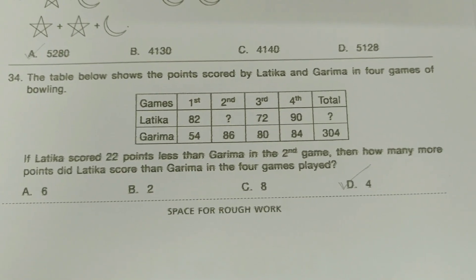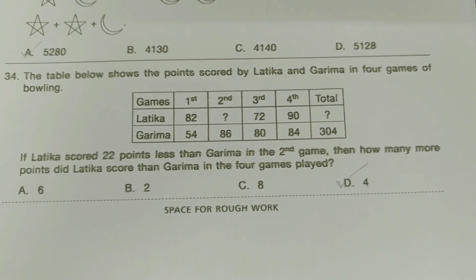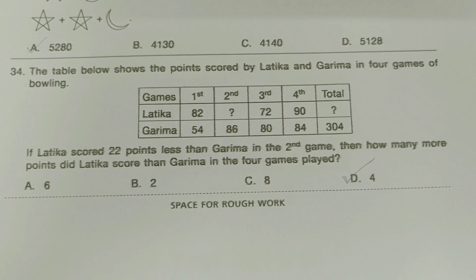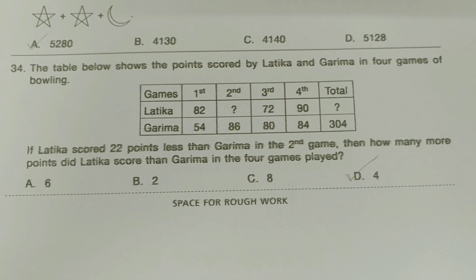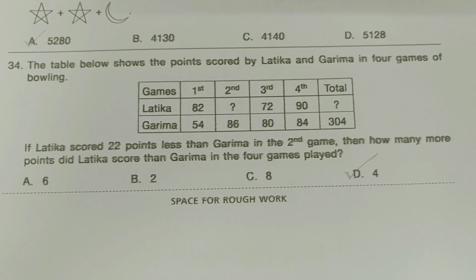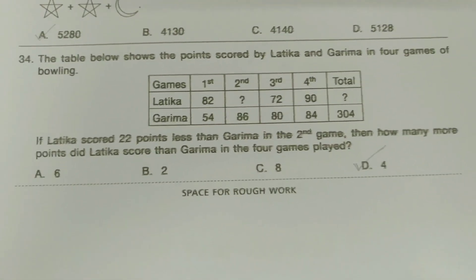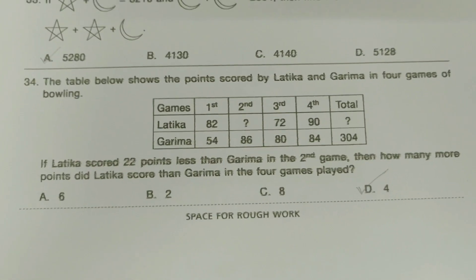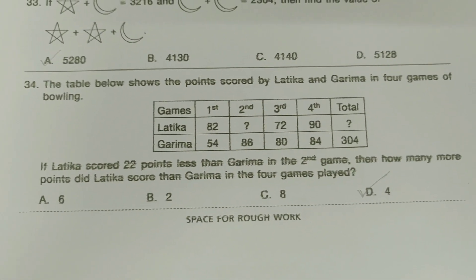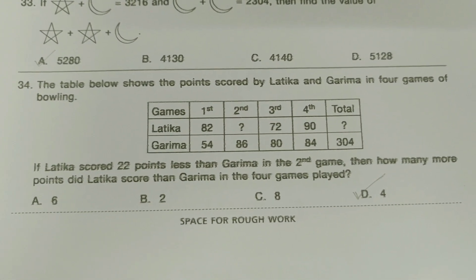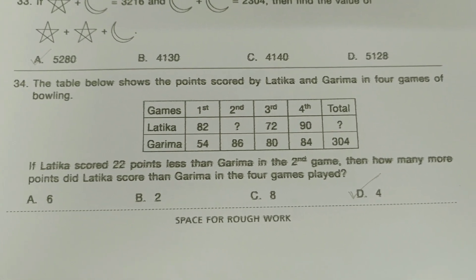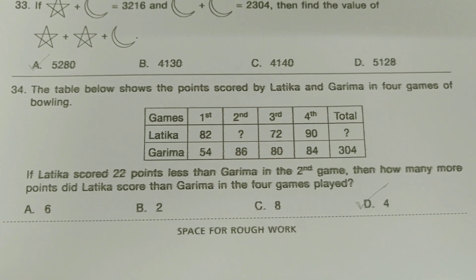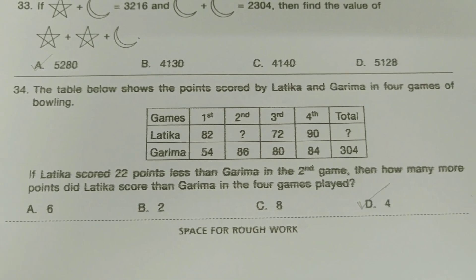The table below shows the points scored by Latika and Garima in 4 games of bowling. If Latika scored 22 points less than Garima in the second game, then how many more points did Latika score than Garima in the 4 games played? The answer is D — 4.